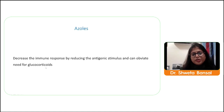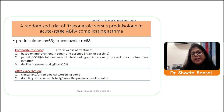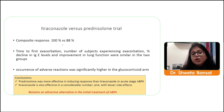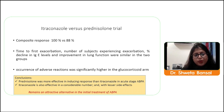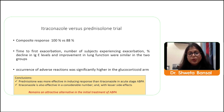A 2018 trial compared itraconazole versus prednisolone in acute stage ABPA. The composite response was 100 percent in the steroid group versus 88 percent in the antifungal group, so steroids were superior. However, time to first exacerbation, number of exacerbations, IgE levels, and lung function improvement were similar. In patients who cannot tolerate steroids — such as those with diabetes or hypertension — itraconazole may be an attractive alternative as upfront management.